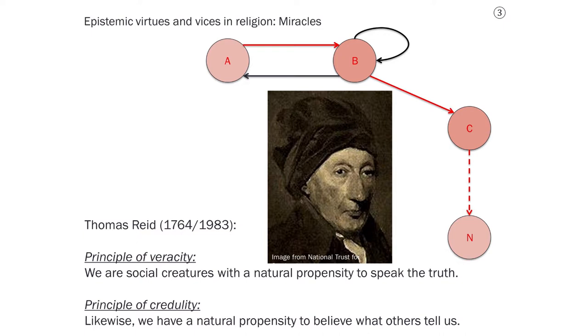He says that we are social creatures by nature, and that means that we have a natural propensity to speak the truth. That means that he thinks that people have a sort of inborn source virtue, that they're naturally disposed to say what they think. They're naturally disposed to report what they know and not what they merely guess or what they think is false.